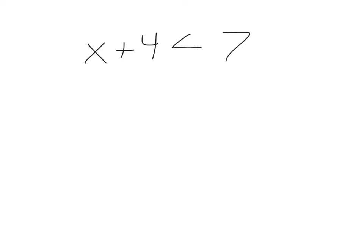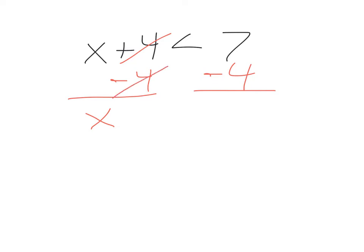Let me show you what I mean. If I solve this inequality the way I would do an equation: I have x plus 4 is less than 7, and we're going to do the opposite. Since I'm adding 4 to x, I'm going to subtract 4. If I do that on one side of the inequality, I better do it on the other side too. Positive 4 and negative 4 cancel, leaving x is less than 7 minus 4, which is 3. So I have x is less than 3.